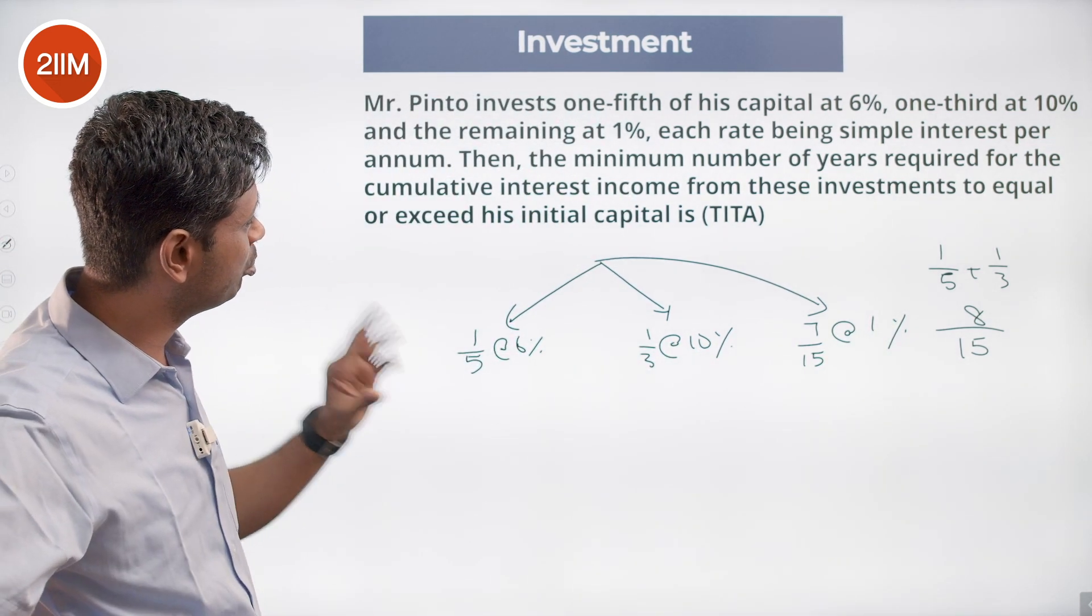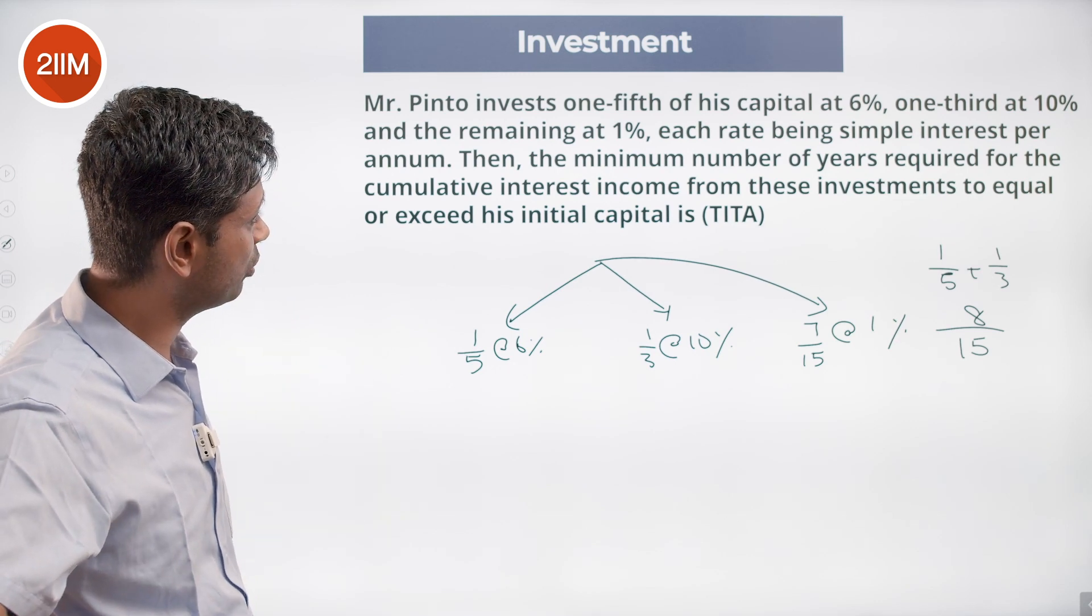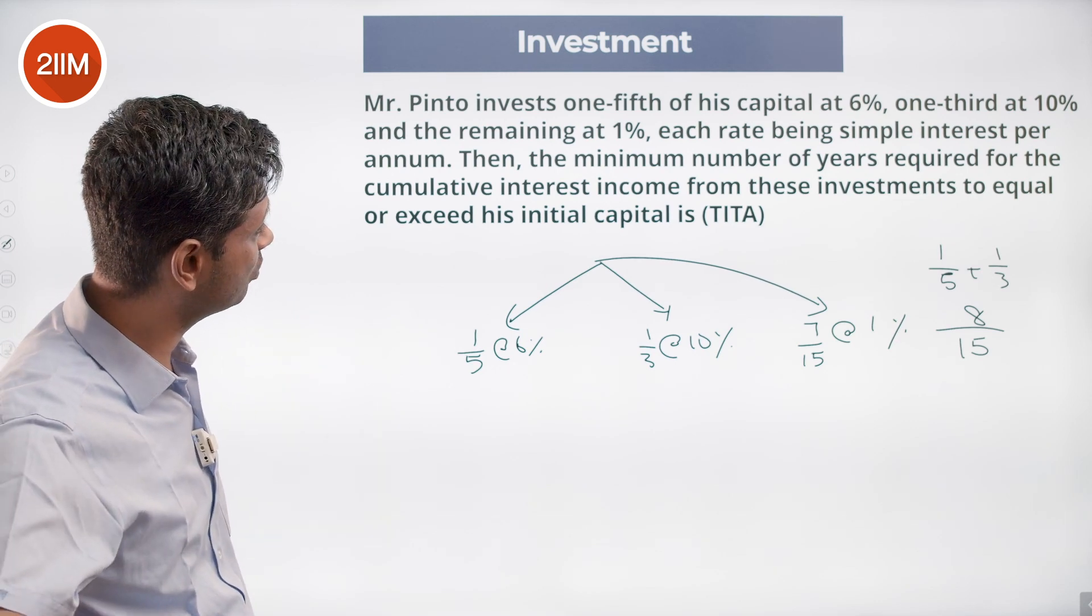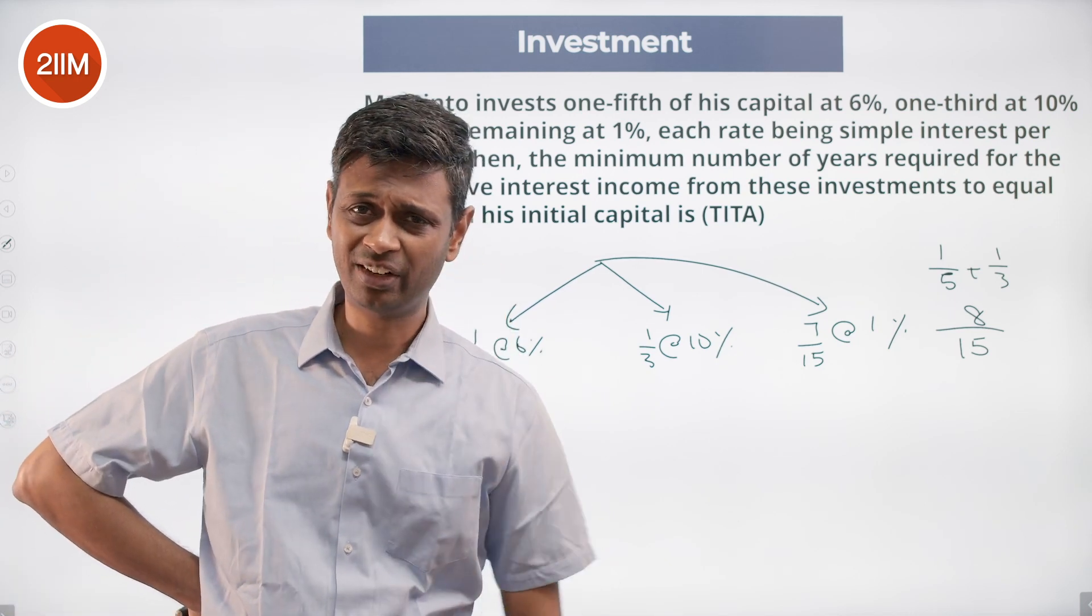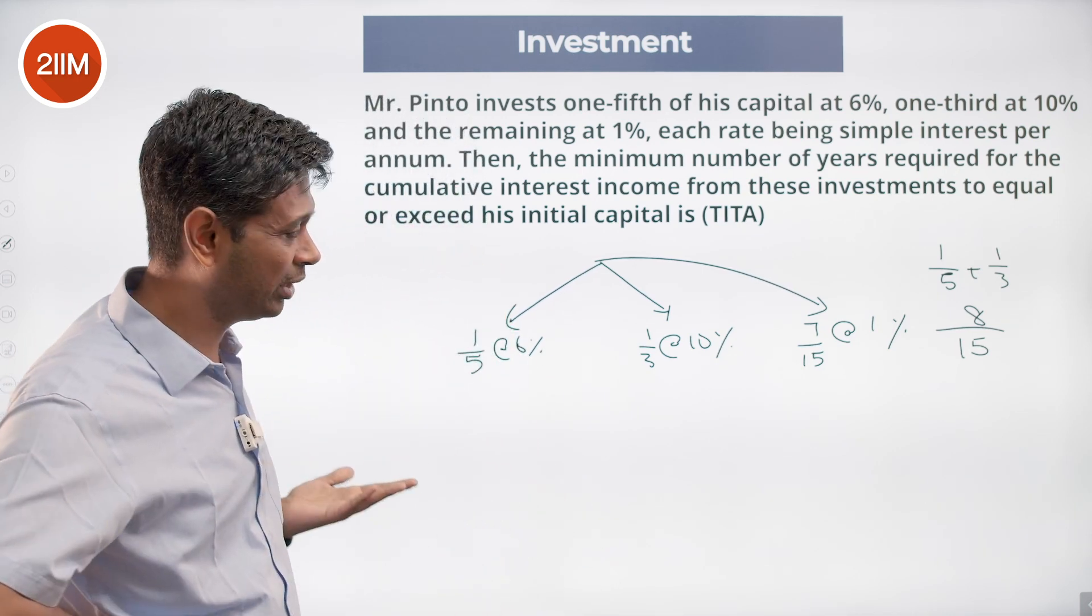Each rate being simple interest per annum, then the minimum number of years required for the cumulative interest income from these investments to equal or exceed his capital. Find the weighted average interest rate, it's all simple interest.